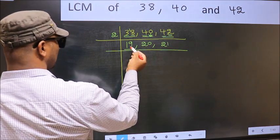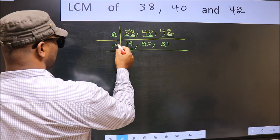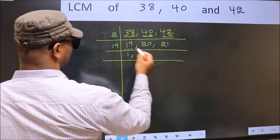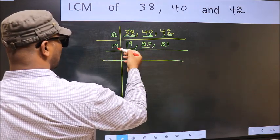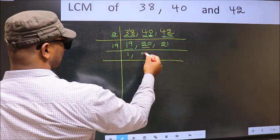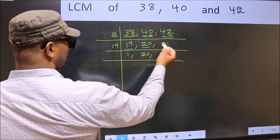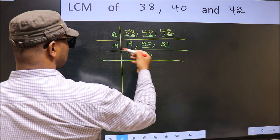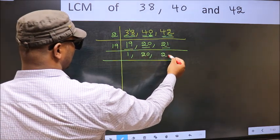Now here we have 19, 19 is a prime number, so 19 once is 19. The other number 20, not divisible by 19, so you write it down as it is. The other number 21, not divisible by 19, so you write it down as it is.